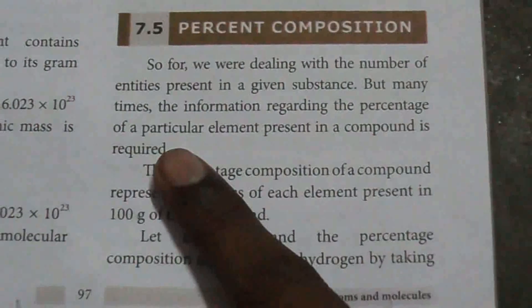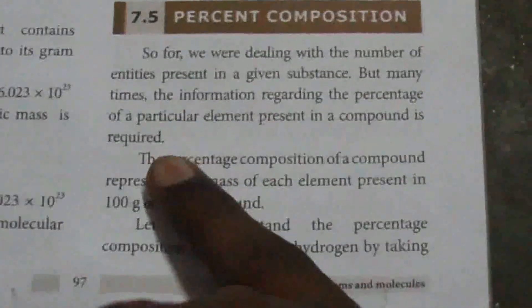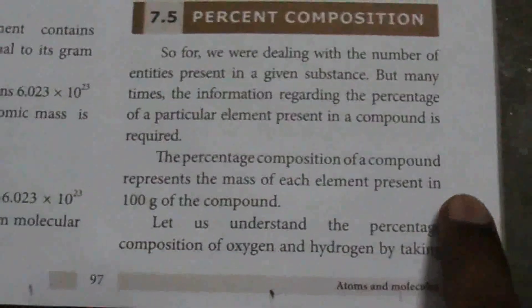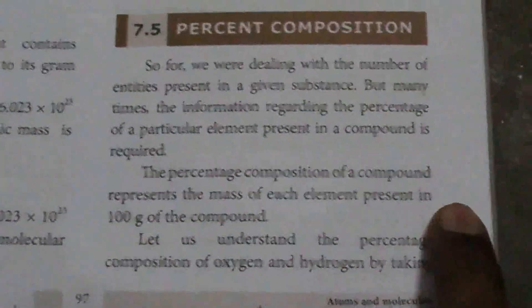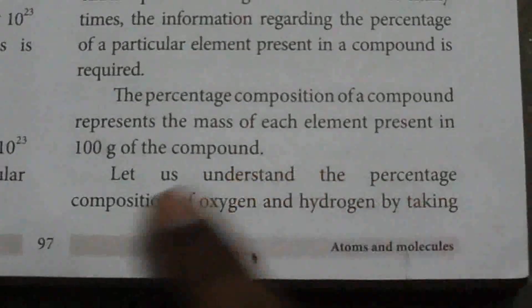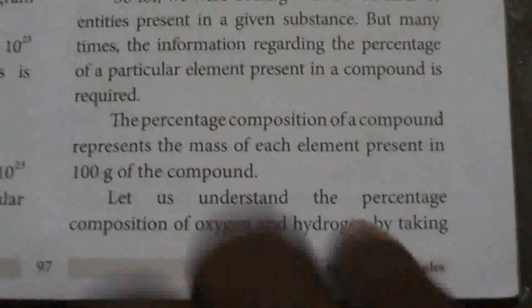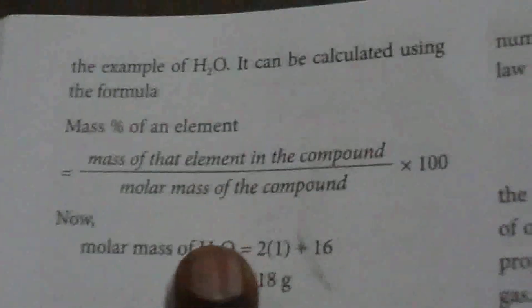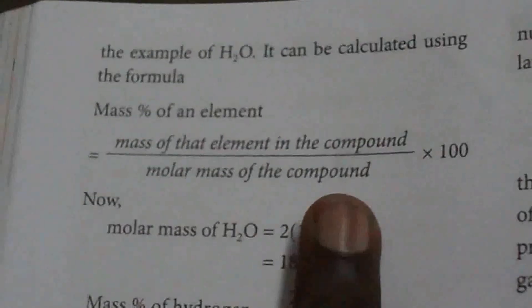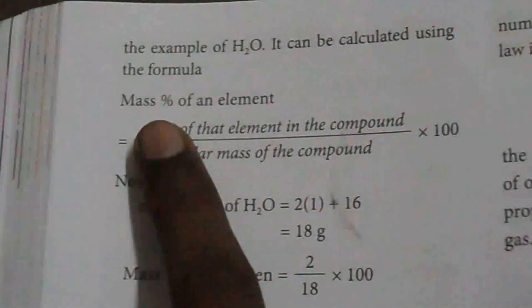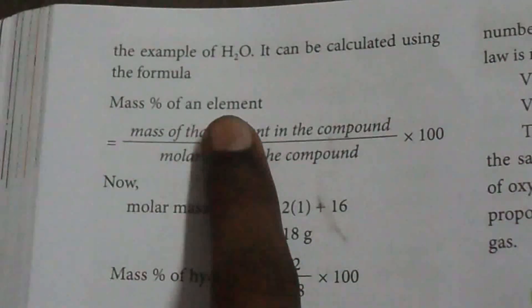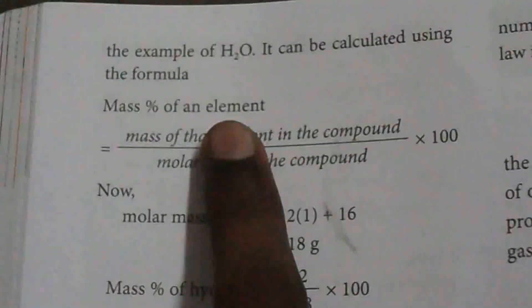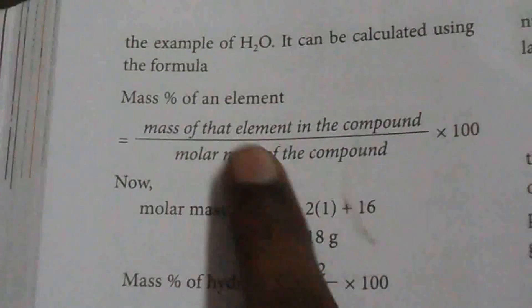This compound is H2O. There is hydrogen and there is some presence. Let us understand the percentage composition of oxygen and hydrogen by taking the example of H2O — it can be calculated using the formula.